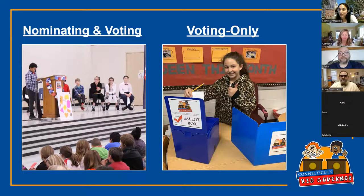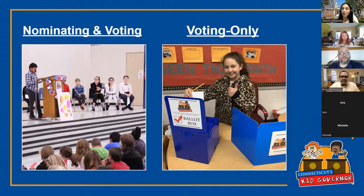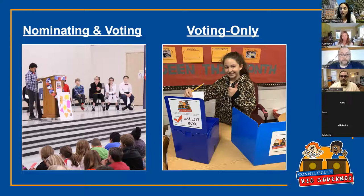The names are pretty self-explanatory, but I'll go over them to make sure we're all on the same page. Nominating and voting classes are the ones who submit a potential candidate to run for Kid Governor in the election. Voting only classes, of course, only vote in the election. Both classes get a chance to vote.